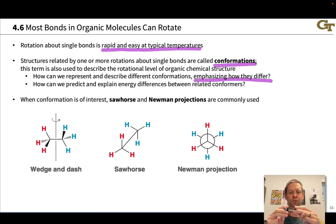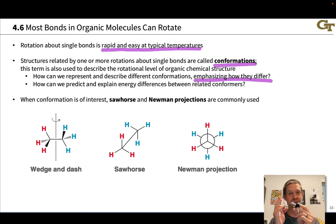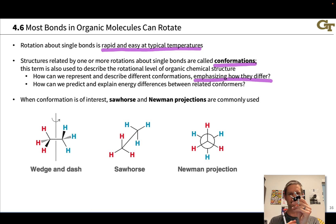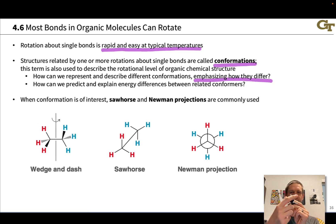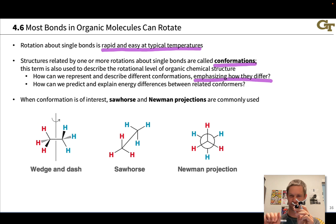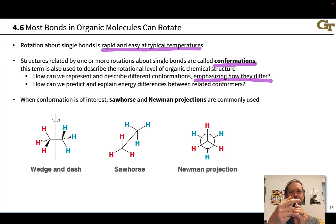Every time we rotate, the wedges and dashes are going to change. And so what we often do is actually move the entire molecule and assume a perspective where the rotation and what's different between two structures related by a rotation is much more clear. From a perspective like this, it's very easy for us to tell when the front carbon has rotated with respect to the back. This is an operation that we're going to call torsion, like wringing out a towel, rotating one side of a towel with respect to the other.